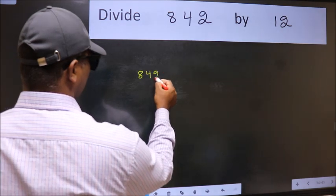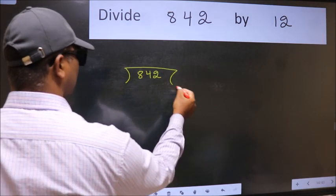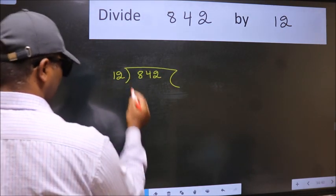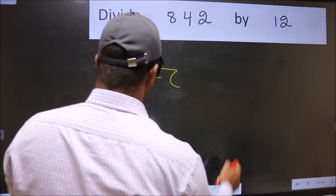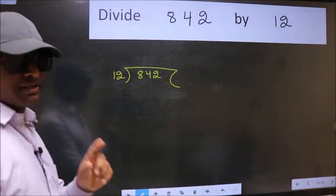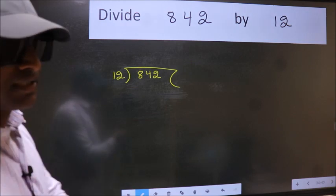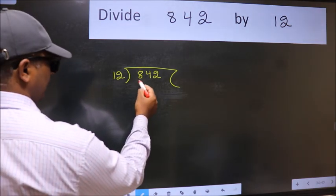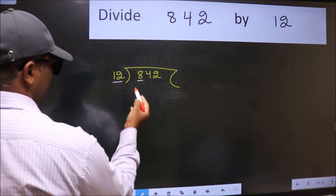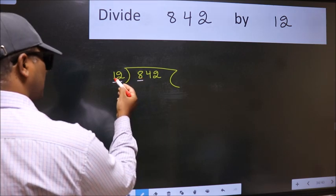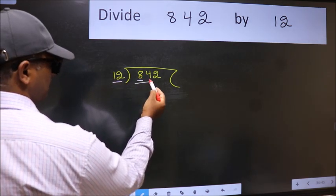842 here, 12 here. This is your step 1. Next, here we have 8 and here 12. 8 is smaller than 12, so take two numbers 84.